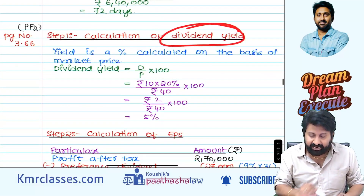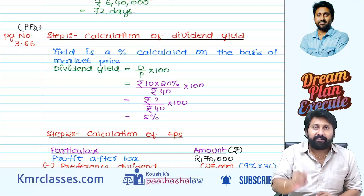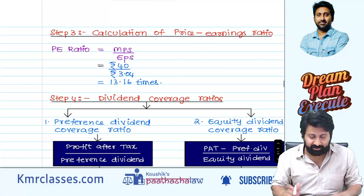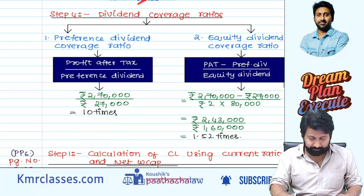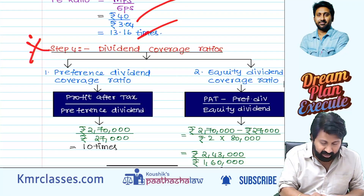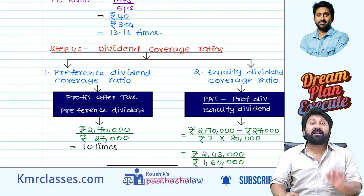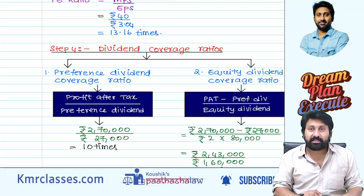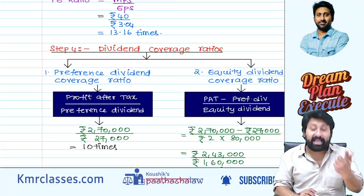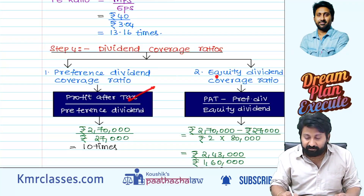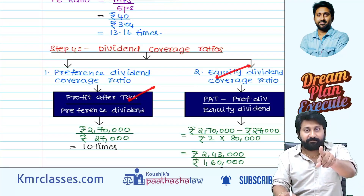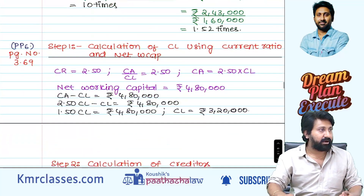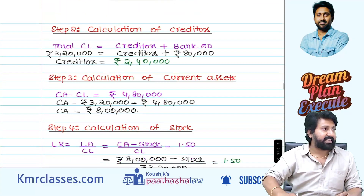Dividend yield: dividend divided by market price into 100. PE ratio: MPS by EPS. Dividend coverage ratio — there are two types: preference dividend coverage and equity dividend coverage. Preference dividend is paid out of profit after tax, so PAT is in the numerator. Equity dividend is paid out of PAT minus preference dividend. Preference dividend coverage = PAT by preference dividend; equity dividend coverage = (PAT − preference dividend) by equity dividend.